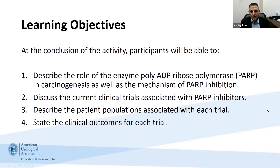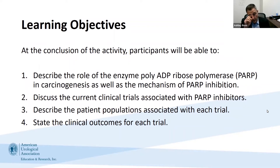We have a few learning objectives for today. At the conclusion of this activity, we want you to be able to describe the role of the enzyme poly-ADP ribose polymerase, or PARP, in carcinogenesis, as well as the mechanisms of PARP inhibition. We want you to discuss clinical trials associated with PARP inhibitors, particularly the PROFOUND and TRITON studies that led to currently available approvals. We also want you to describe the patient populations, clinical outcomes, and limitations of each trial.